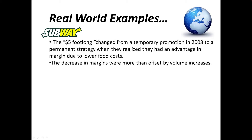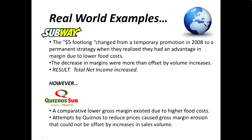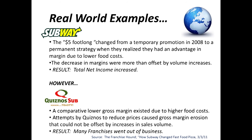Subway did have a decrease in margins, but from their analysis they knew — or suspected — that it would be more than offset by volume increases. And they were correct; total net income increased. Quiznos tried to follow suit, but they had a lower gross margin because their food costs were much higher. They tried the same strategy and their margins eroded, and they could not make them up in increased volume.